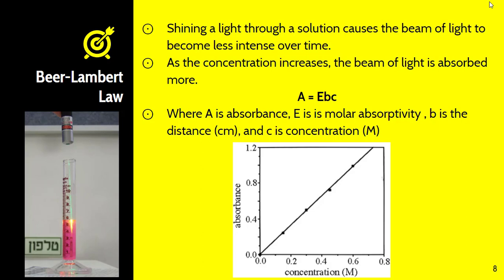As the concentration increases, the beam of light is absorbed more. This is given with the equation A = εbc, where A is the absorbance, ε is the molar absorptivity, b is the distance, and c is the concentration. I just want to make sure you understand that you can establish a relationship between these things. Notice that it is a linear relationship. That's really important to understand. You will take a lot of this into consideration when we do a lab utilizing Beer's law a little bit later on in the next couple weeks.